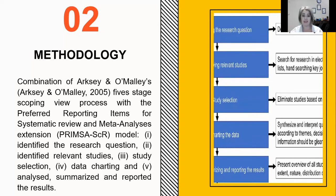To gain a deeper understanding, we combined Arksey and O'Malley's five stages of scoping review process with the preferred reporting items for scoping review and meta-analysis extension — the PRISMA-ScR model — until we finally had an approach where we could identify the research question, identify relevant studies, make the study selection, chart the data, and then analyse, summarise, and report the results.